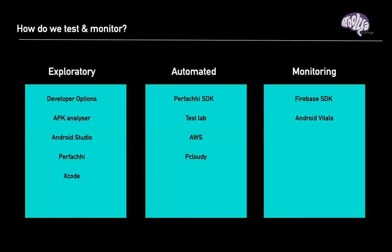Moving on to how we monitor performance — what tools can we use? I've divided them into three categories: exploratory, automated, and monitoring. For exploratory, the most handy tool is the developer options available on every phone. You can use it to see how the app is responding — is it crashing, increase display size, increase font size, enable 'Don't keep activities', restrict how much RAM is being used, reduce screen refresh rate, or root the phone to expand what you can do with developer options.